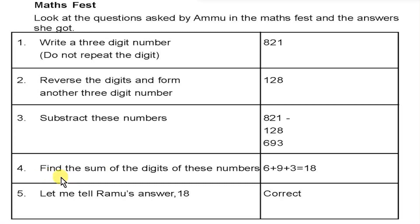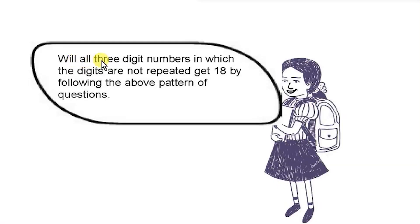Now find the sum of the digits of 693. 6 plus 9 is 15, and 15 plus 3 is 18. Ramos's answer is 18. Is that correct? Yes. Will all three-digit numbers in which the digits are not repeated always give 18 by following this pattern?